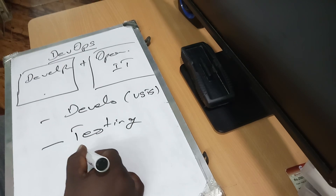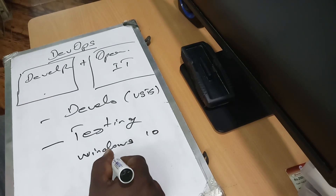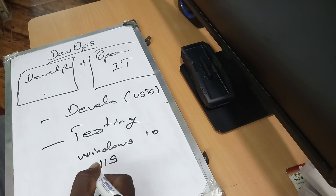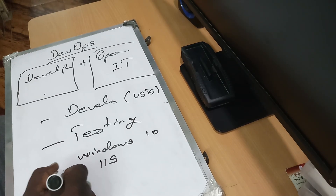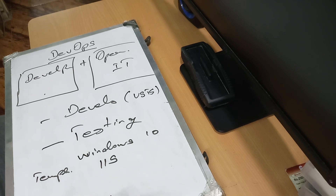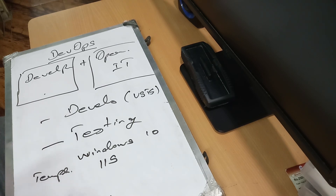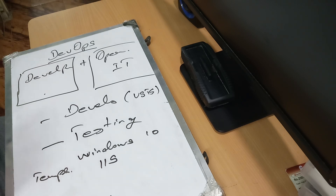We are going to use Windows OS and IAS. You need to create a template for development, a template for testing, a template for QA, and a configuration for production. You need to use the same template across testing and production environments.